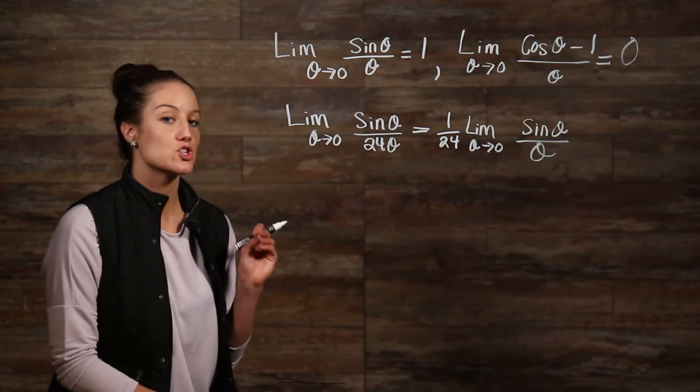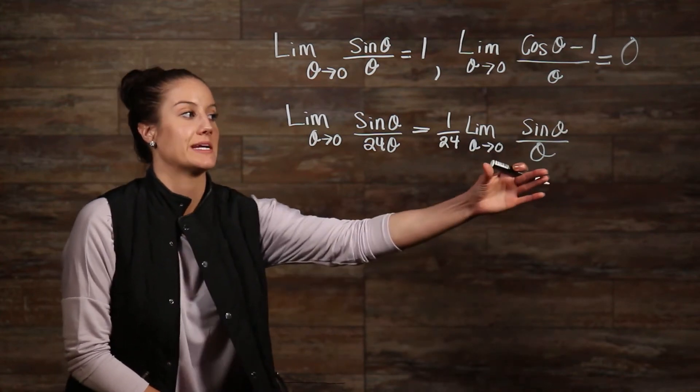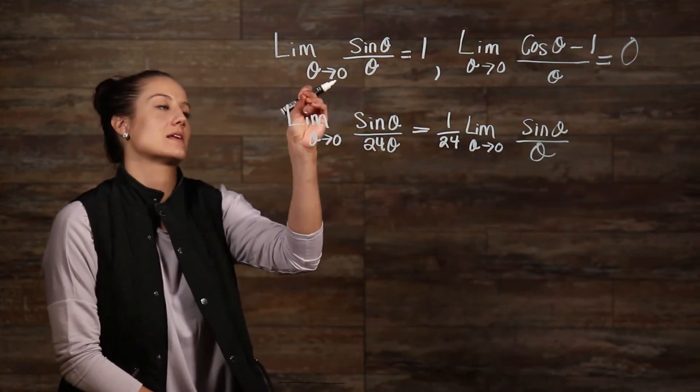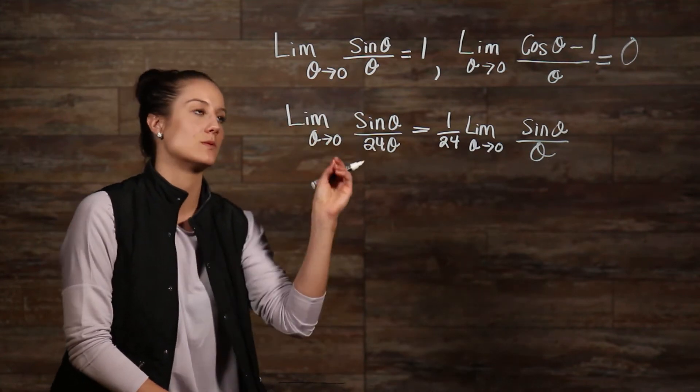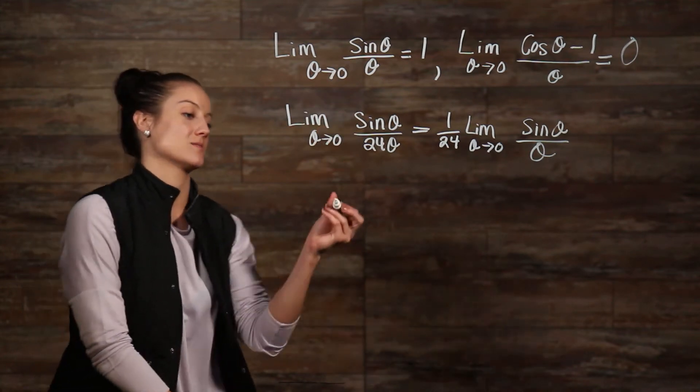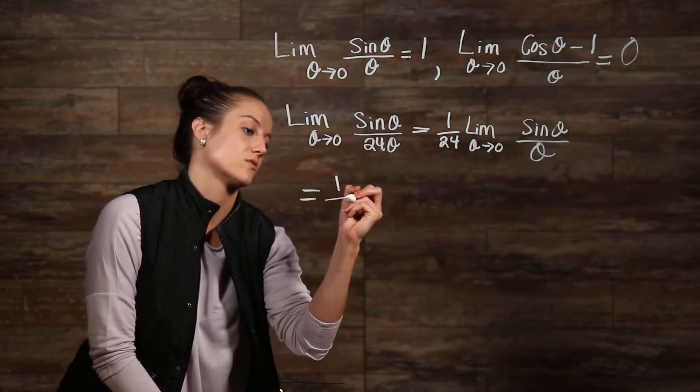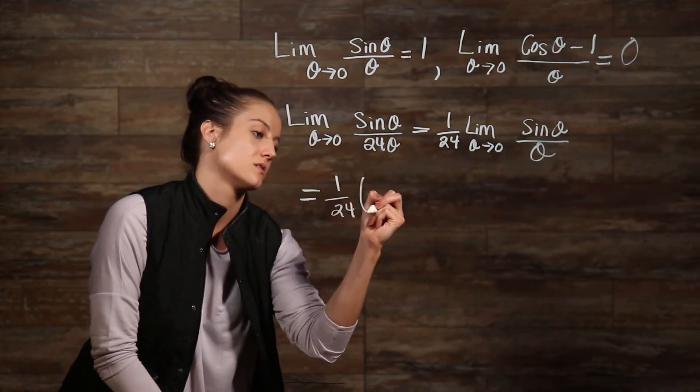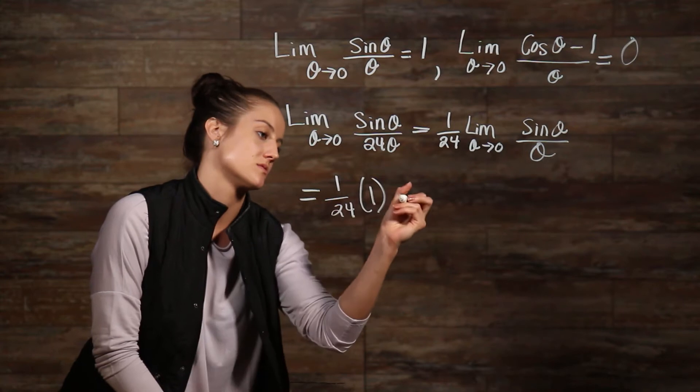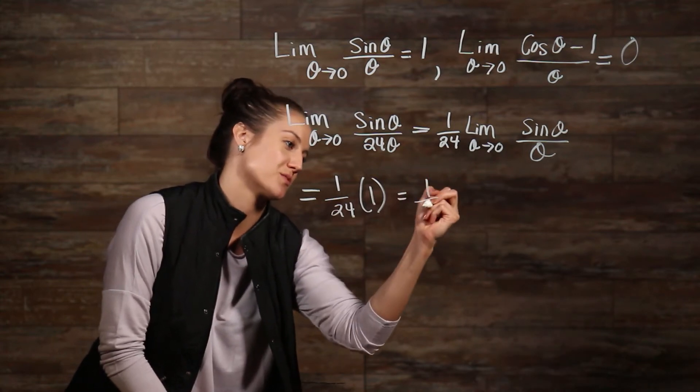Now at this point we should be able to recognize this right here. It's one of our facts. The limit as θ goes to 0 of sinθ over θ is equal to 1. So that leaves us with 1 over 24 times 1, which is equal to 1 over 24.